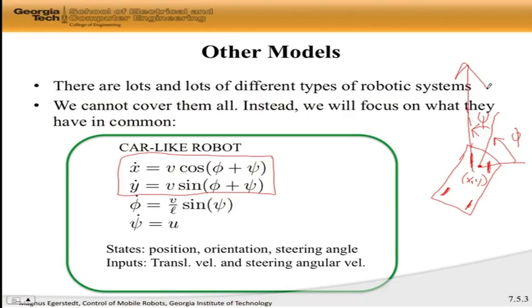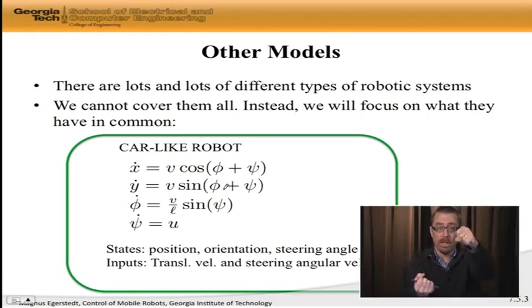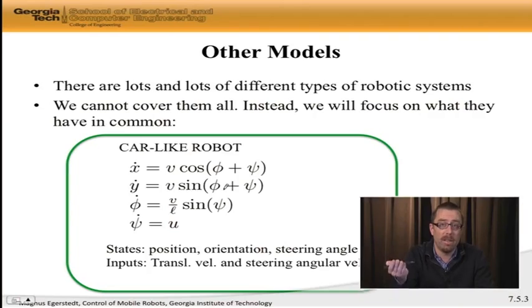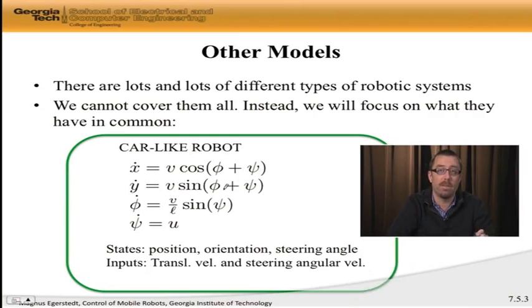All I wanted to show here is that we have almost the same equation for x and y. The only difference is that we're now going in this direction, which is phi plus psi. And then, the orientation has its own dynamics that's a function of the velocity and the steering angle. And then, what we can do, is we can control how quickly we're steering. So, psi dot is equal to u. This is the next level up in complexity, where we no longer have a unicycle, but a car-like robot.